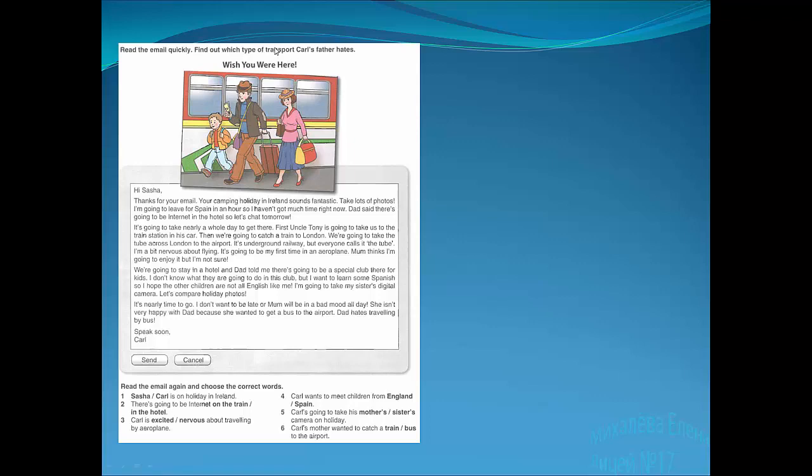So find out which type of transport Carl's father hates. Carl's father hates traveling by bus. Now let's read it by yourself and choose the correct words. Sasha, Carl is on holiday in Ireland. There is going to be internet in the hotel. Carl is nervous about traveling by airplane. Carl wants to meet children from Spain. Carl is going to take his sister's camera on holiday. Carl's mother wanted to catch a bus to the airport.